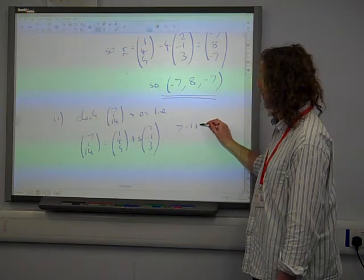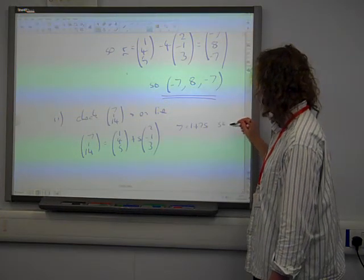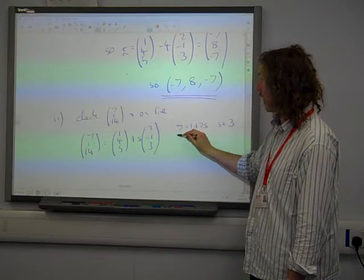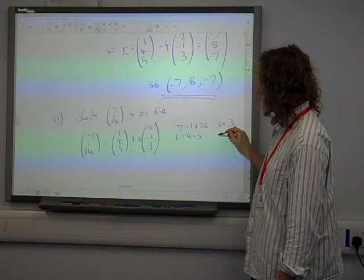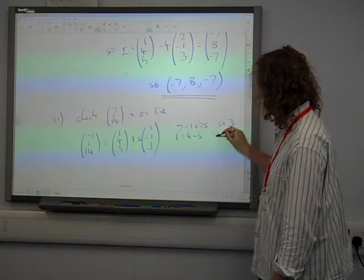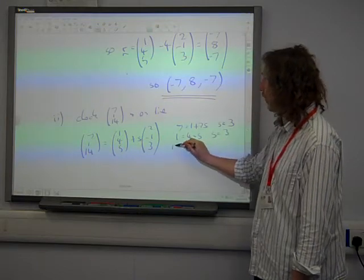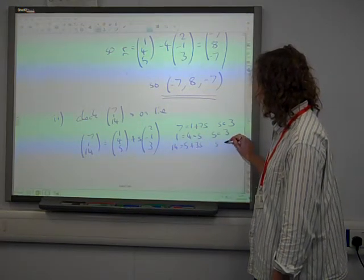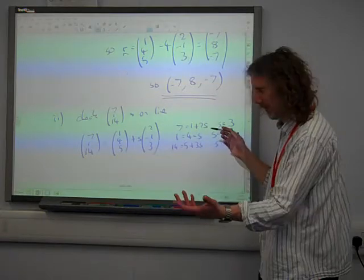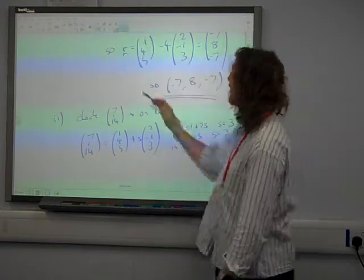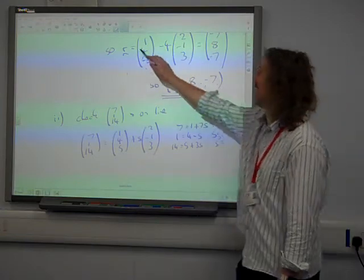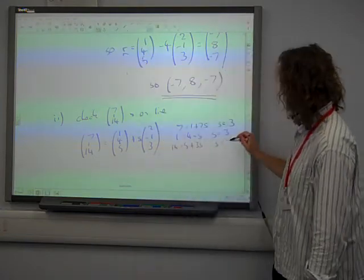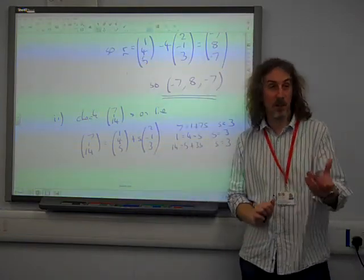7 is 1 plus 2s. That gives us s is 3. 1 is 4 minus s. That gives us s is 3. There we go. So that's right. So that point is on the line.